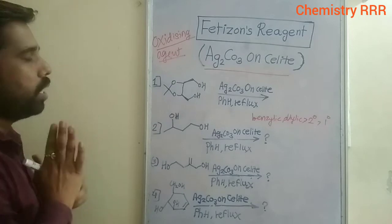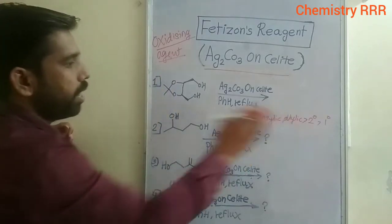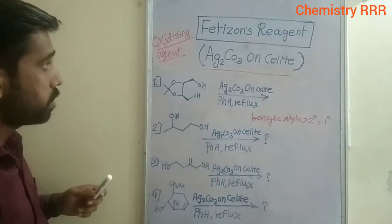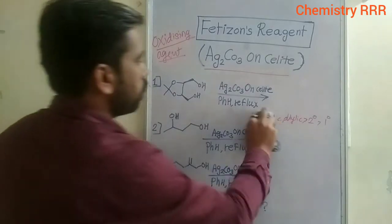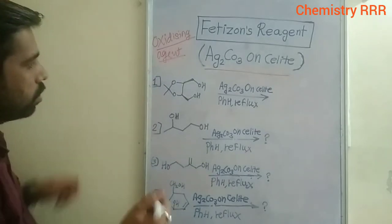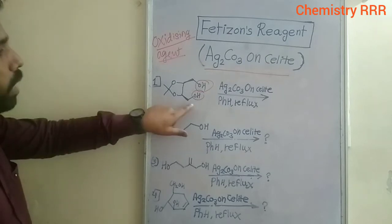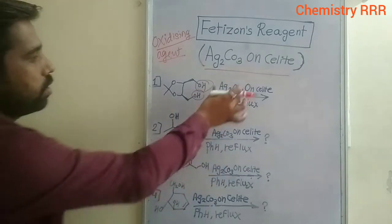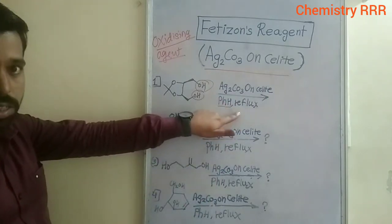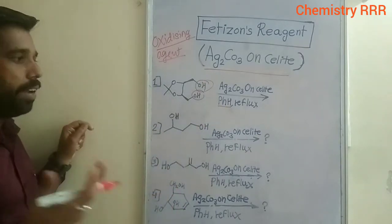Fétizon's reagent is very important for the oxidation of benzylic, allylic, secondary, and primary alcohols. Now let's discuss the first example. In the first example, both alcohols are primary alcohols. On treatment with Fétizon's reagent — silver carbonate on Celite — with benzene as solvent under reflux conditions, one of the primary alcohols gets converted into the corresponding aldehyde.